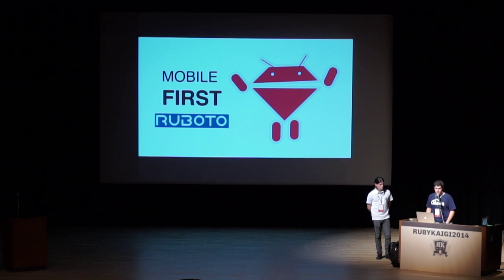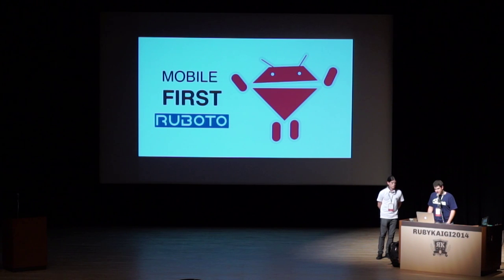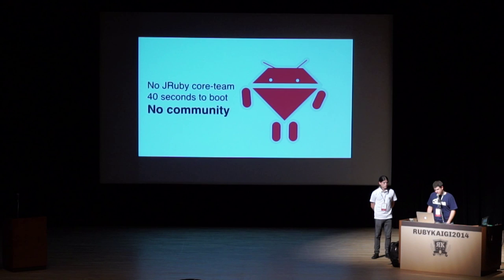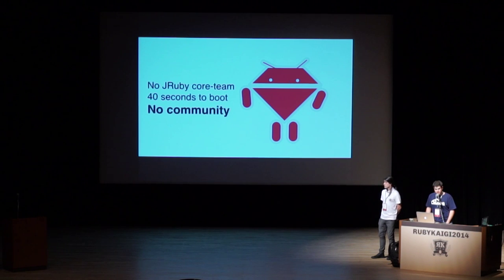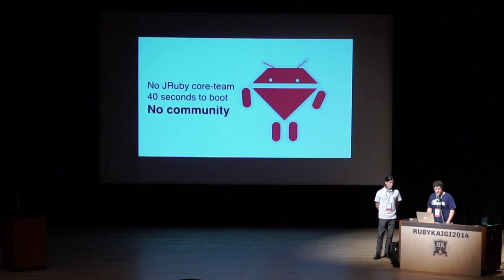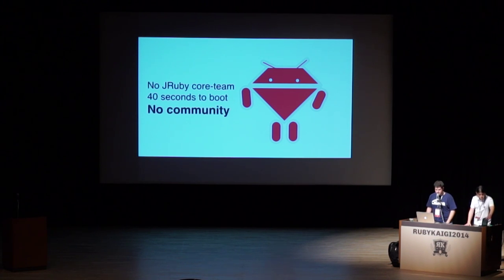We tried Ruboto — if you don't know, Ruboto is basically JRuby on Android. We tried that and it wasn't that good. JRuby didn't work well for that project, had no community, and the first proof of concept took about 40 seconds to boot. Our clients would actually be using the cheapest Android devices.